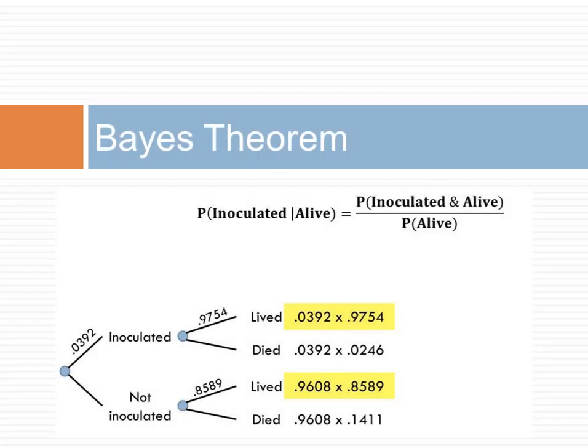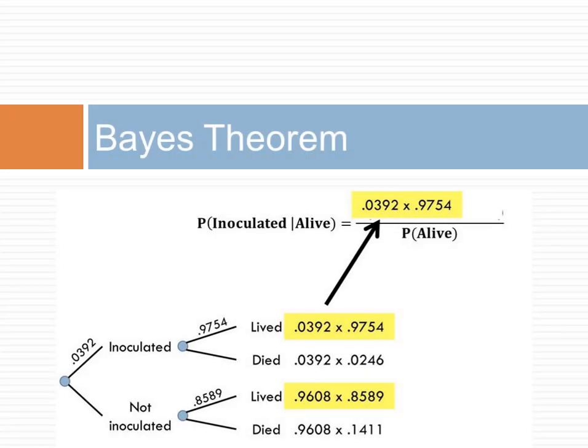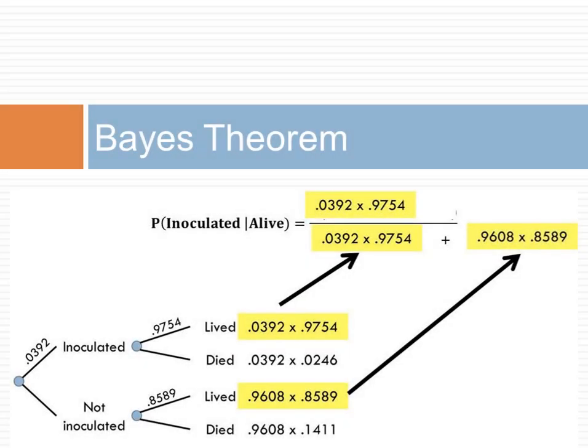Let's see if we can calculate the probability of inoculation given that we see the patient is alive. The top part is replaced with the probability of being alive and inoculated. The bottom part is replaced with all ways in which the patient lives.